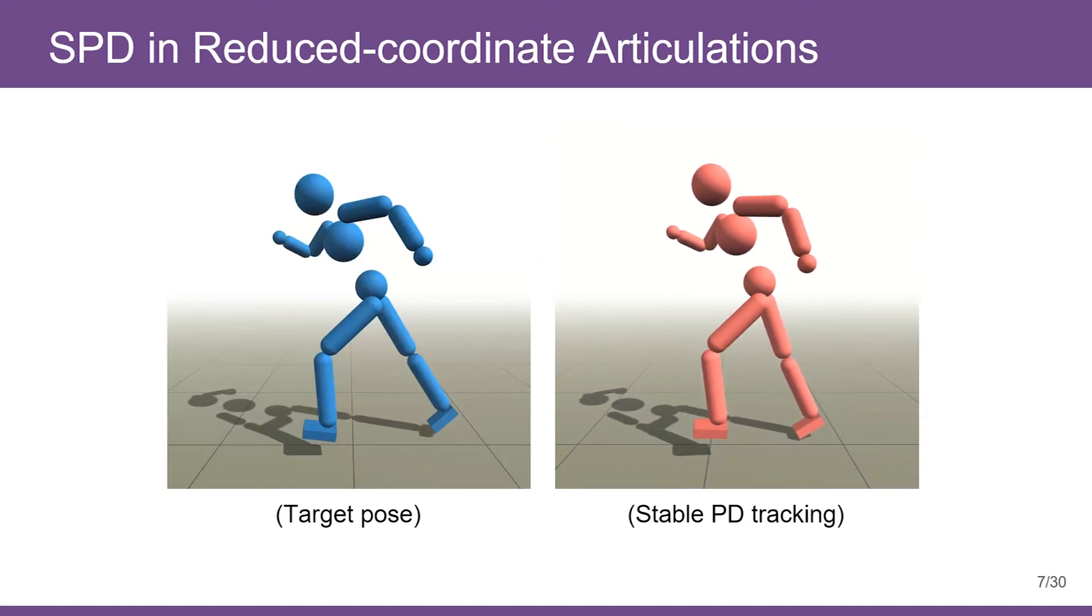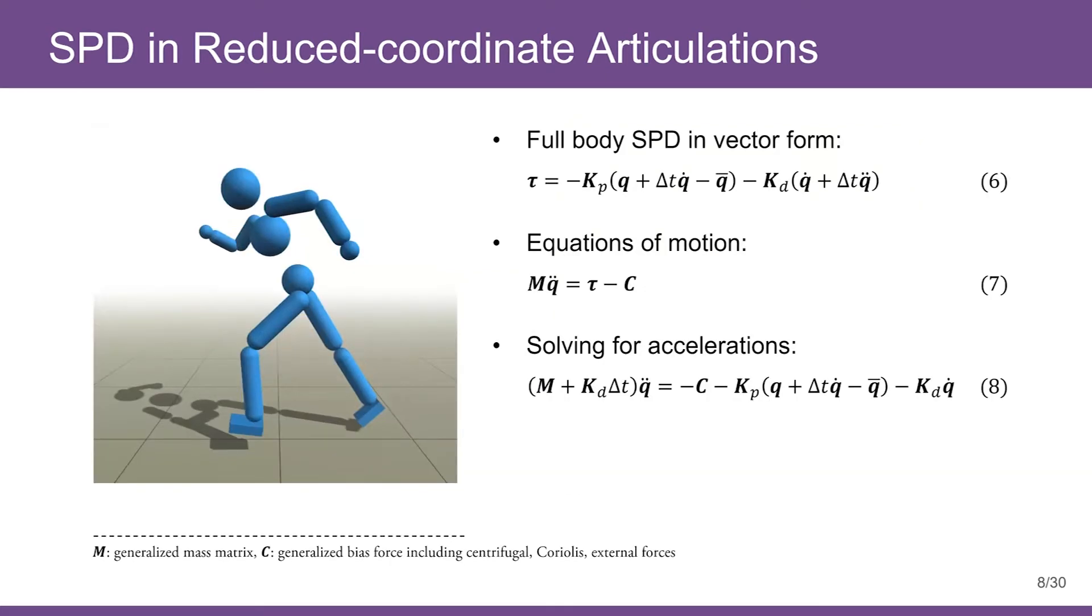In our work, we focus on SPD formulated in a reduced-coordinate articulation system, or Featherstone's articulations. To control an articulated rigid-body system like a humanoid figure, we first need to write down SPD control force formula in vector form shown in equation 6. To solve for the unknowns, we need to combine equation 6 with equation 7, which is the full-body equations of motion.